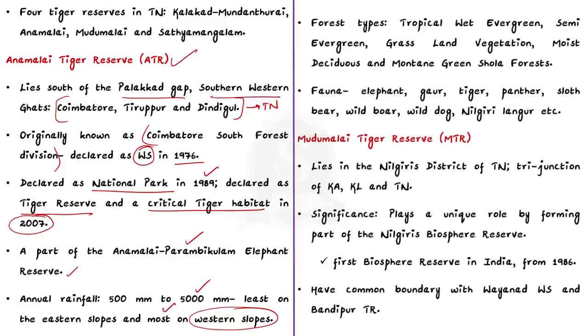This has resulted in diverse forest types in Anamalai Tiger Reserve. The types of forest include Tropical Wet Evergreen Forest, Semi Evergreen Forest, Grassland Vegetation, Moist Deciduous Forest and Mountain Green Shola Forest.